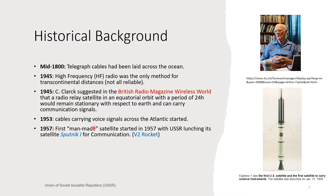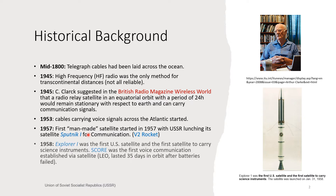They followed this with a second satellite, Sputnik 2, not much later. The Americans sent Explorer 1 the next year — the first U.S. satellite and the first to carry scientific measurement equipment, though no communication yet. This was followed by SCORE, which established the first voice satellite communication in December of that same year using low Earth orbit, lasting about 35 days in orbit before it failed. Here's the picture of Explorer 1.